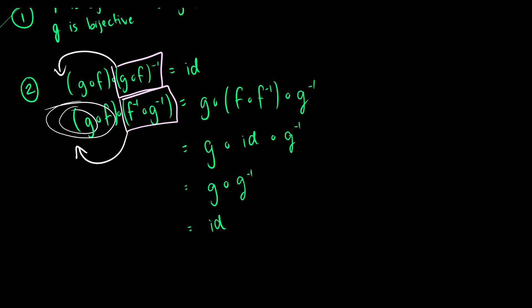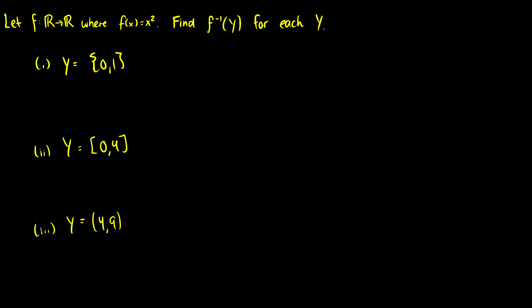So that's the first question. The second question says, let f be a function from reals to reals, where f(x) is equal to x². And I want to find f⁻¹(Y) for each set Y.